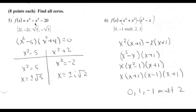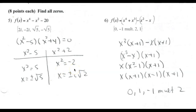Minus 5 and 4 will do that, so this factors as (x² - 5)(x² + 4). To find the zeros, set each factor equal to 0 and solve for x. The first gives x² = 5, so x = ±√5. The second gives x² = -4, so x = ±i√2. Those are the four zeros for this problem.